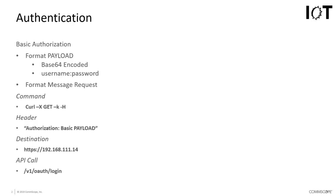If we were using a command line tool we would use something like curl, with a GET request, and format the header using 'Authorization: Basic' with the Base64-encoded username and password. The destination would be the IP address of the IoT controller, and the specific API call would be /b1/oauth/login. We forward that request to that URL with the authorization payload.